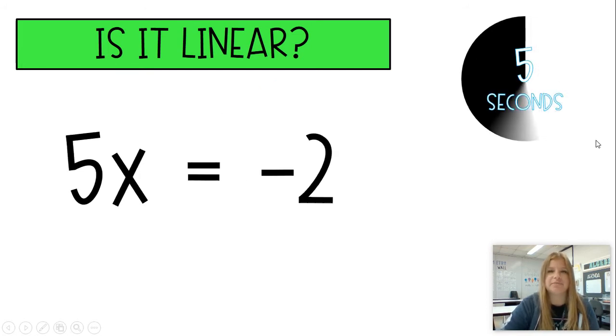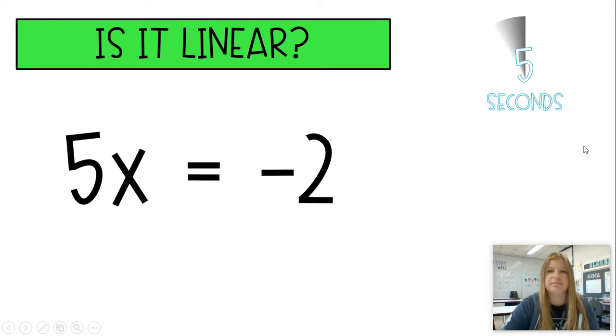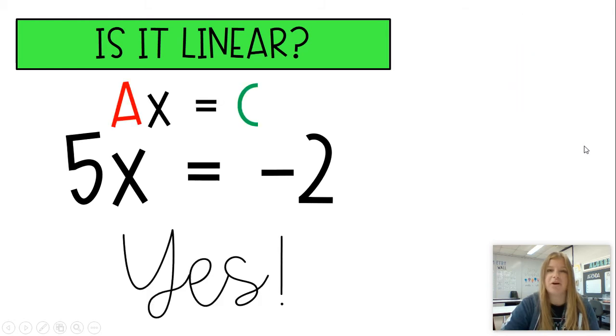5X equals negative 2. Yes, also linear. Remember, B can be 0. So if B is 0, you don't see any Y in your equation, because BY just ends up being 0. So AX equals C is definitely a linear equation. A here is 5, C is negative 2.